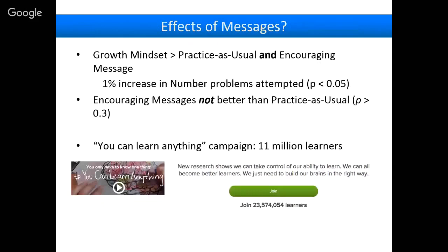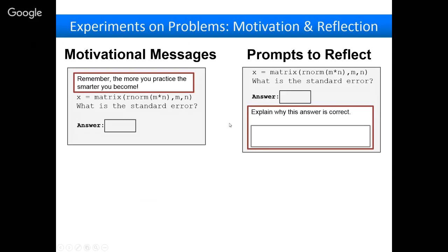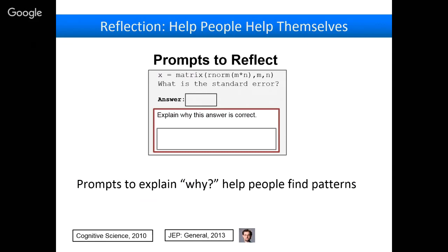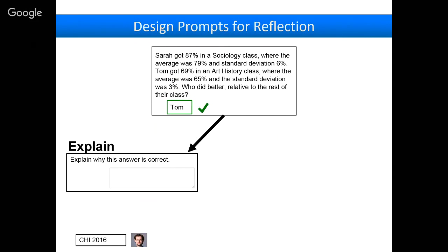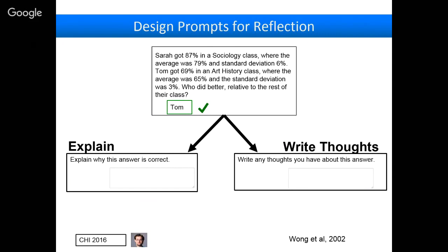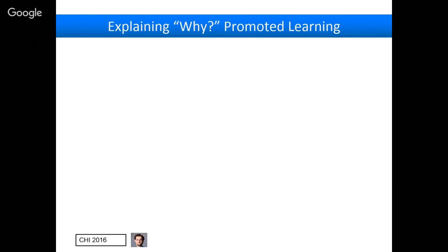If you prompt someone to explain their thinking, it can actually help them understand something better. What I investigated was: why exactly does prompting somebody to explain help, and under what conditions is it just wasting their time? In this research I looked at statistics problems and compared prompting people to explain why an answer was correct with having them write their general thoughts. Even though these prompts look really comparable — both involve articulating language, both involve spending time explaining — explaining why produces significantly better learning.